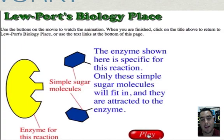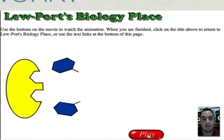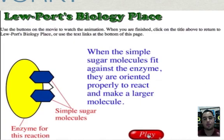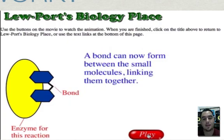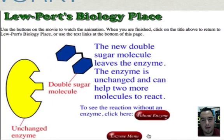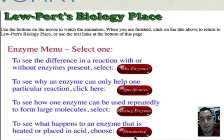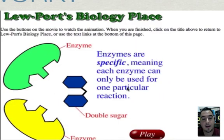But now with an enzyme, look what happens. Again, here it is for a specific reaction. And the enzyme almost grabs them together and makes them work fast, makes them combine at the right angle. So the enzyme assists them. Now a bond can form between the small molecules linking them together. And now you have the products. The new double sugar molecule leaves the enzyme. The enzyme is unchanged and it can do the reaction again and again.